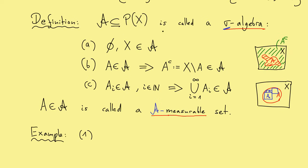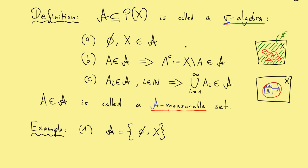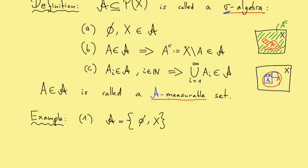We know that a sigma algebra needs at least two elements, namely the empty set and the set X itself. And this is always the smallest possible sigma algebra. So A defined with these two elements is a sigma algebra, because B and C in the rules are trivially fulfilled. The complements are in and also all possible unions you can form with these two elements are also in. Hence, this is the smallest possible sigma algebra.